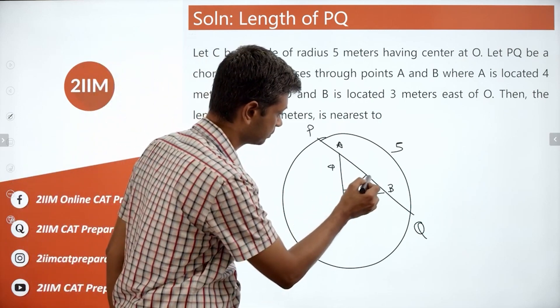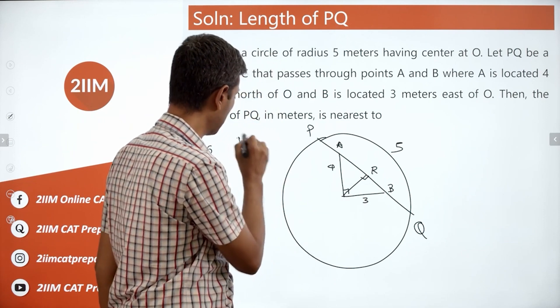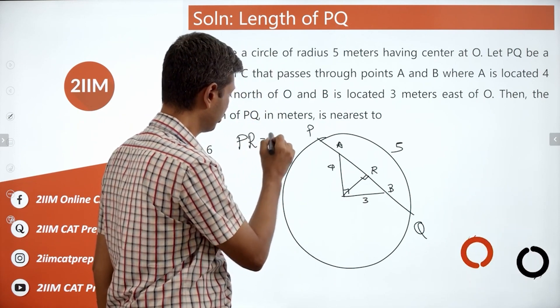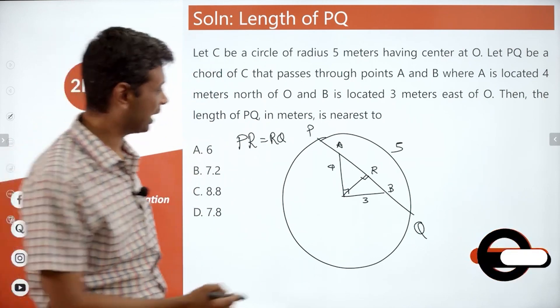So draw this line. Call this as R. We find PR. We know that is same as RQ. Therefore we can find PQ. That is good. How do we find PR?